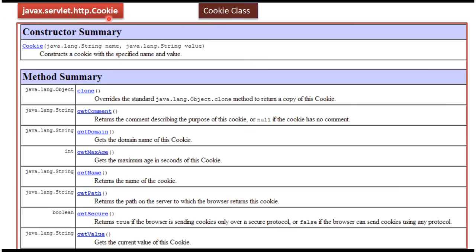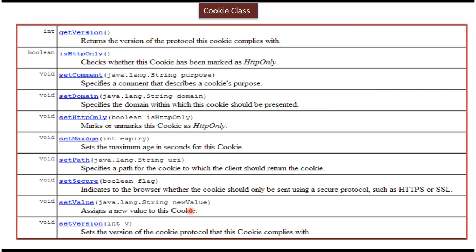This is the cookie class, which is available in the javax.servlet.http package. If you want to create a cookie, you can use this constructor — you have to pass a name and value to the cookie constructor. These are the methods available in this cookie class: you can set the name of the cookie, set the value, set the version, set the max age, get the max age, and get the values — all those things you can do.